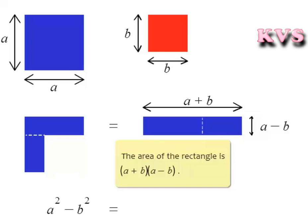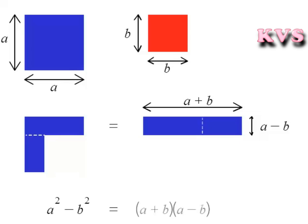We know that the area of the rectangle is equal to length into breadth. Therefore, A square minus B square is equal to A plus B into A minus B.